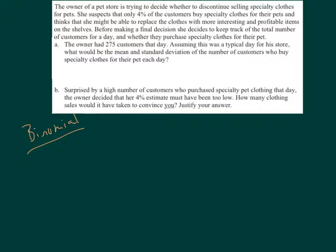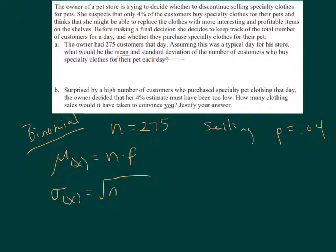Now, keep in mind, this question is a binomial where n appears to be 275. n is equal to 275 customers. A success would be selling an item, and the probability of success is 0.04. Now, all they want on this first question is the mean and standard deviation. So your mean of x in a binomial situation is n times p, and the standard deviation of x is going to be equal to the square root of n times p times q. So this is pretty straightforward. Why don't you go ahead and see if you could fill all that in and get an answer. Press pause now.